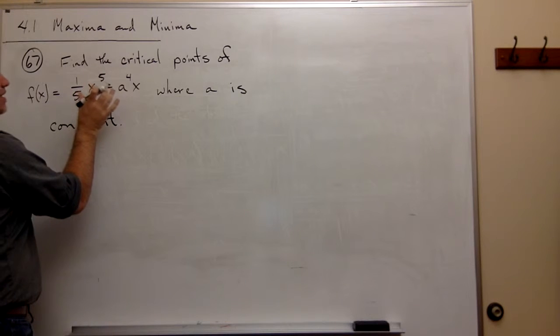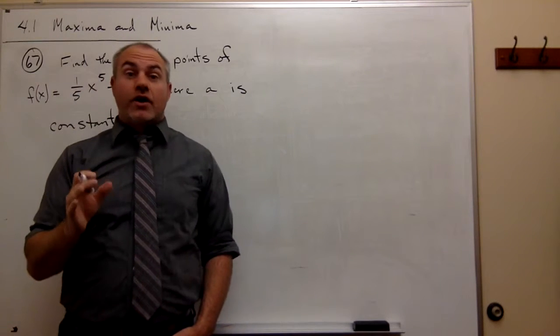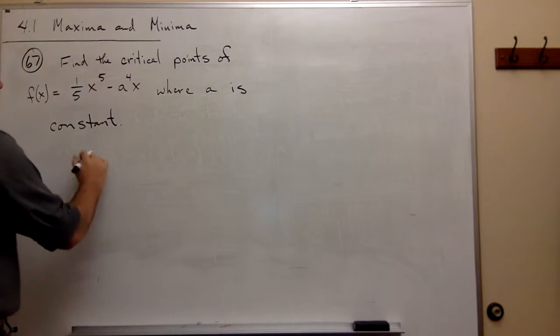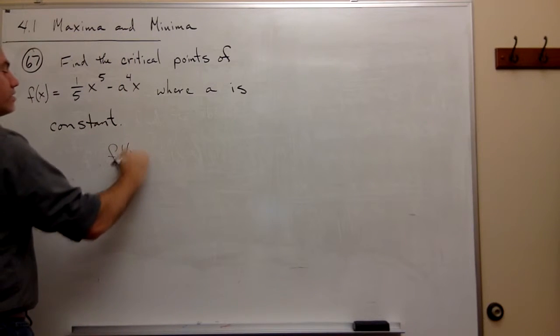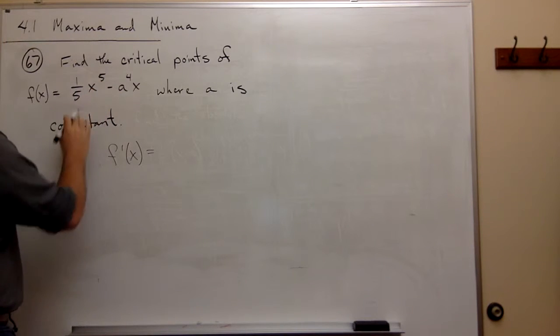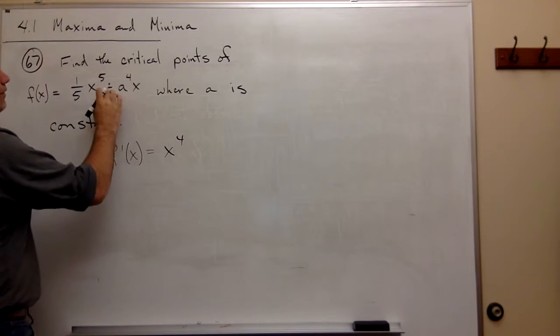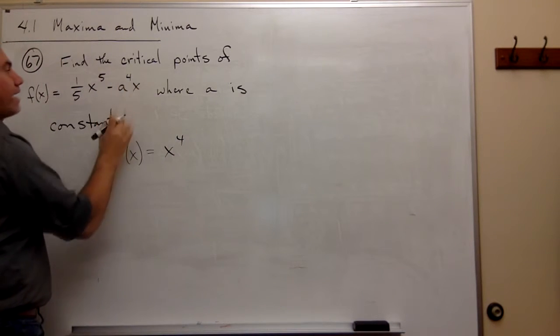The way that we do that is we take the derivative and find out where is that derivative either 0 or undefined. So we take the derivative, f prime of x, and it's equal to the derivative of 1/5 x to the 5th is x to the 4th, and the derivative of negative a to the 4th x...